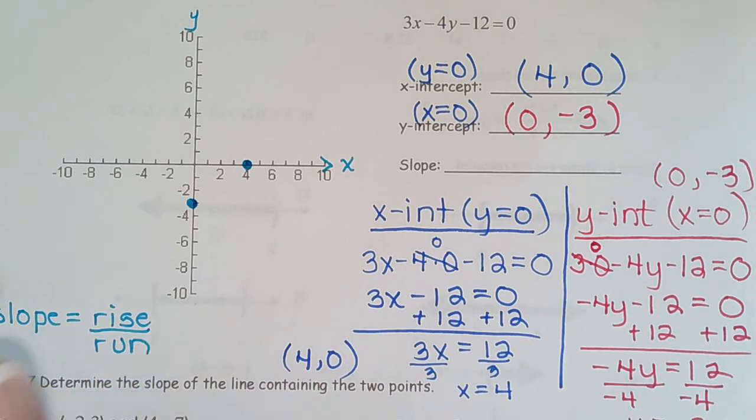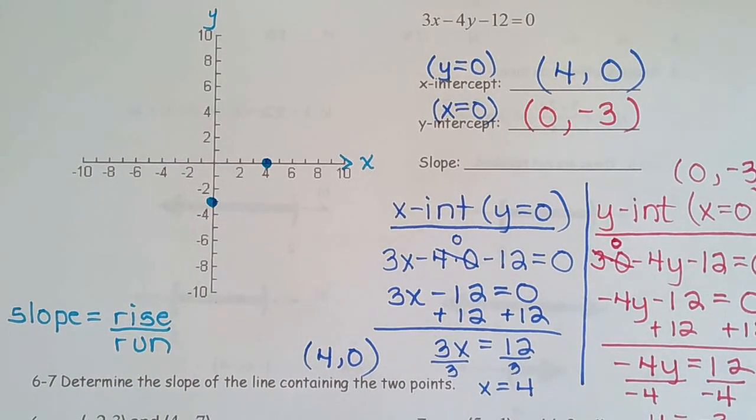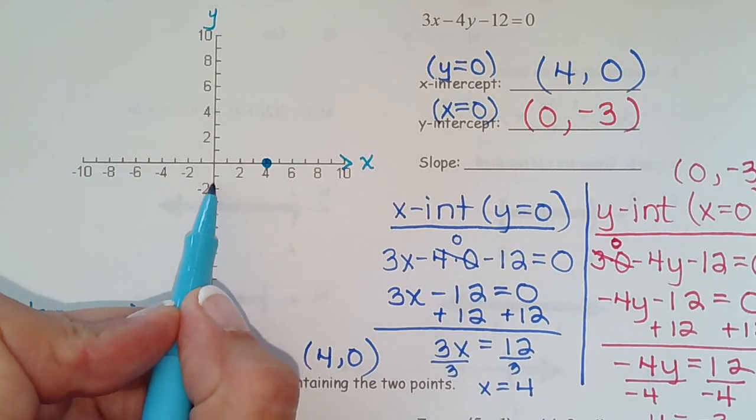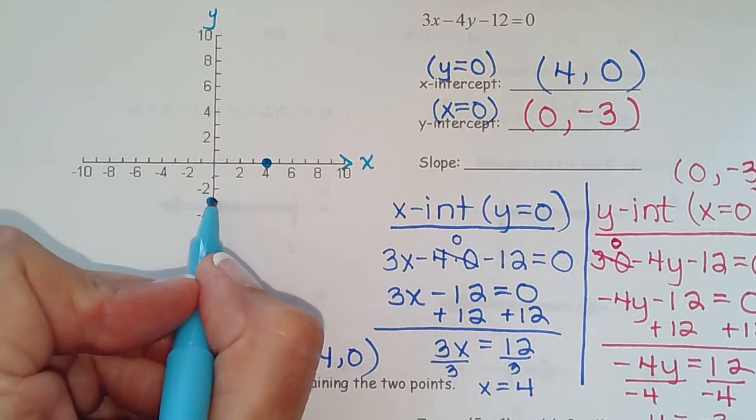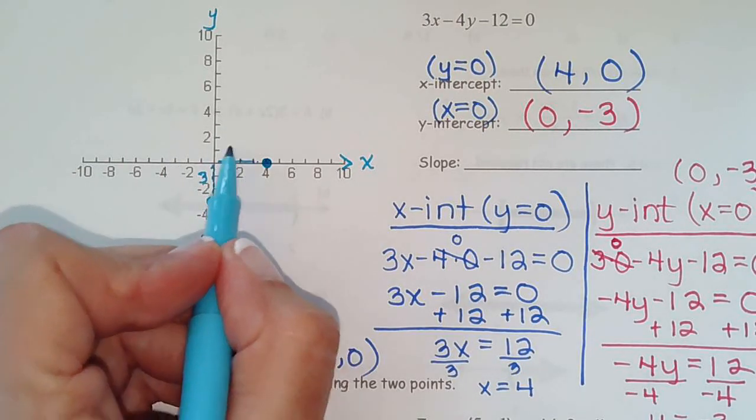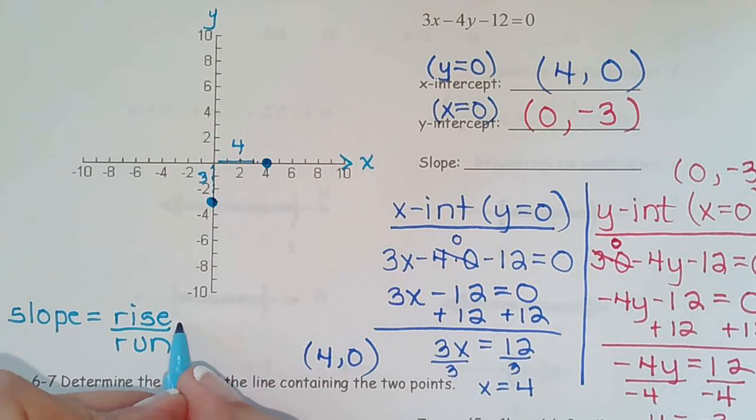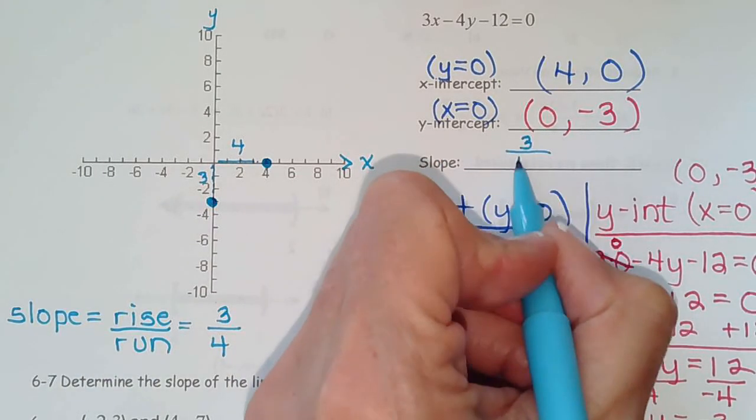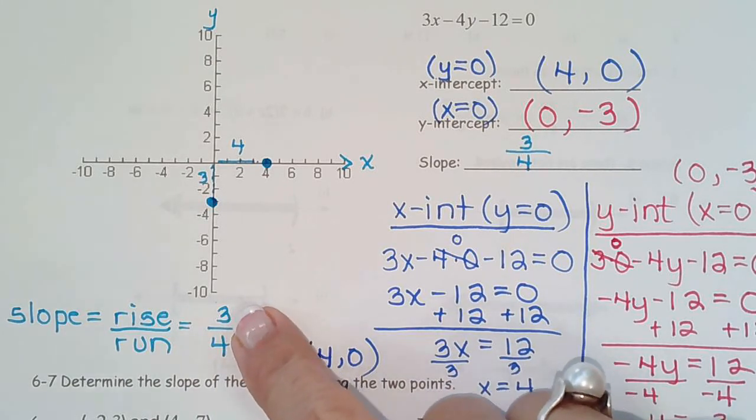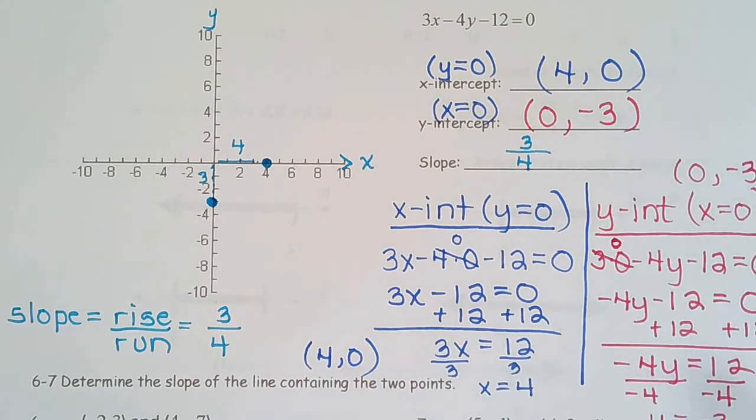So we learned to always start with the left-hand point when we're doing rise over run. So this would be rise one, two, three. Let's just dot that in, three. And run one, two, three, four. So the rise over run is three-fourths. So that's one way to find slope from your graph. And remember that it always has to be simplified. So if you would have gotten like six over eight, just always remember to simplify.